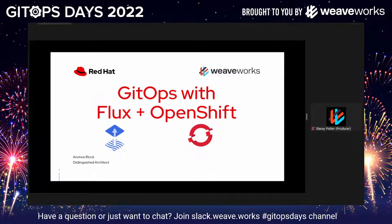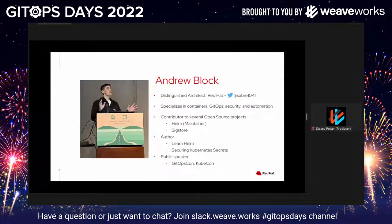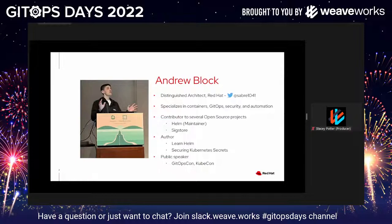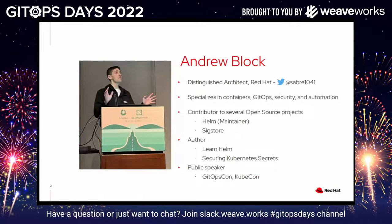Welcome to the presentation today on GitOps with Flux and OpenShift. My name is Andrew Block. I'm a distinguished architect with Red Hat. I specialize on containers, GitOps, security, and automation. I'm a contributor to several open source projects, including being a maintainer on the Helm project, a package manager for Kubernetes, and Sigstore, a project that aims to solve how you sign and verify content.